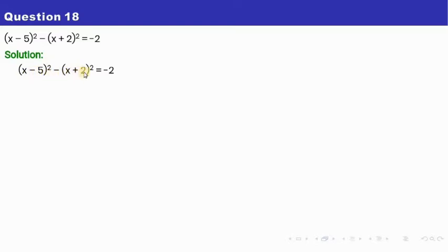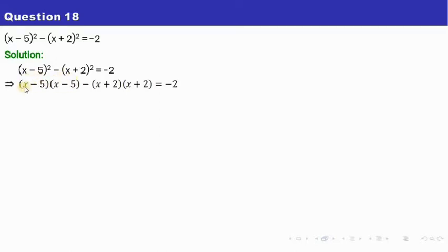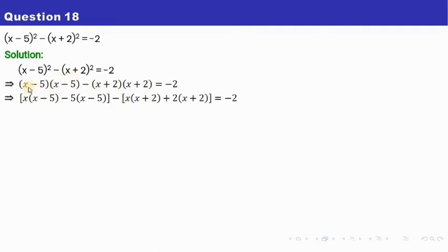Similarly, this x plus 2 whole square can be written as x plus 2 into x plus 2. Now we know how to multiply two terms like this. We will multiply term by term. For example, if you see only this part, it means that you will multiply this next part by only x, that is x into x plus x minus 5. We have got minus 5. So minus 5 into the rest of the thing, that is x minus 5.